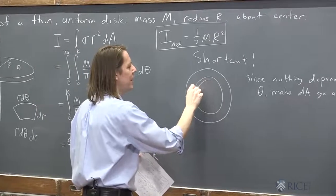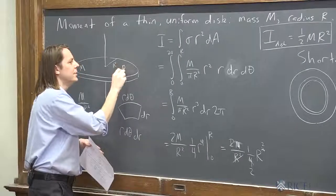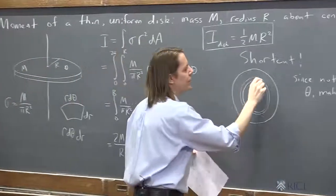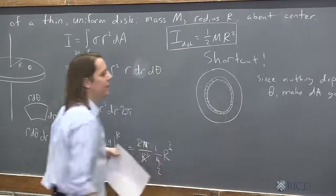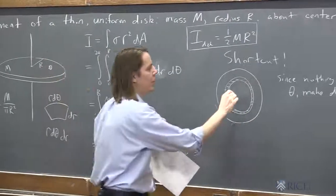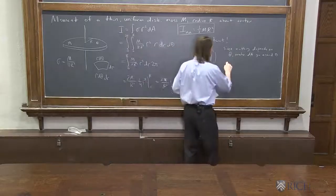So instead of your differential area being this little thing, you just take it all around and your differential area is this little thing. And it's at some radius R, little r.